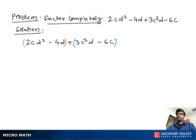Now from the first group we take out 2d as a common factor. Then we have left cd minus 2. Then from the second group we take out positive 3c as a common factor. Then we have left cd minus 2.